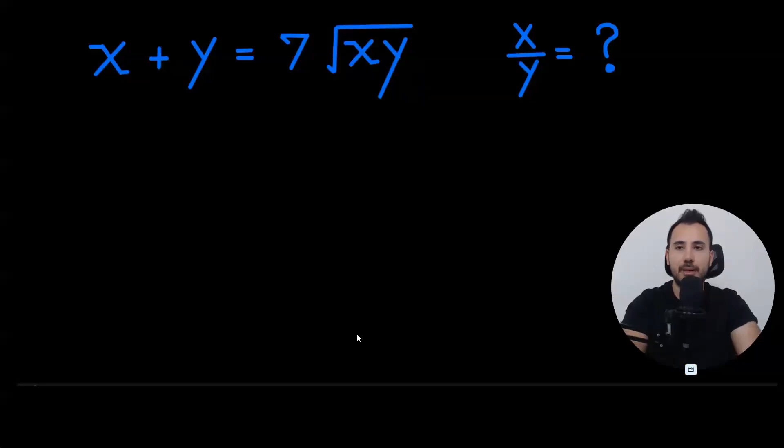Hello, everyone, and welcome to MathX. In this video, we're going to do this very interesting math question. x plus y is equal to 7 square root of xy, and we need to find x over y.